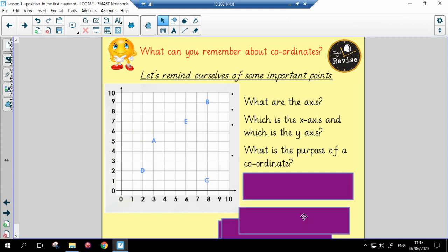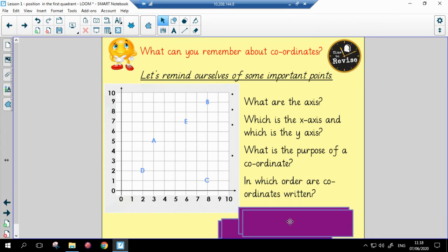The x-axis is the horizontal axis along here, and the y-axis is the vertical axis here. We have coordinates, so we're able to identify the position of something. In this instance, we can see where E is by using coordinates. And in which order are coordinates written? Well, coordinates are always written with the x-axis number or letter going first, followed by the y-axis.